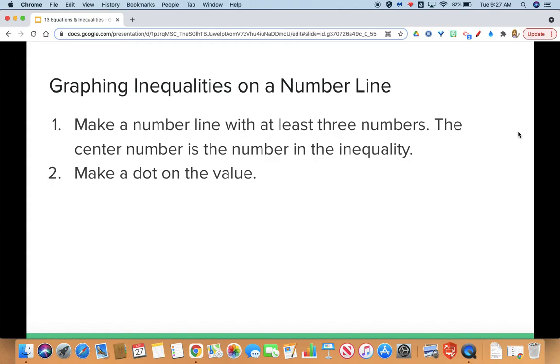Step two is to make a dot on the value. We'll have two different types of dots. An open dot is when you have a greater than or less than sign without the or equal to. These types of dots are open because the value that you have the dot above is not included as one of the possible answers.